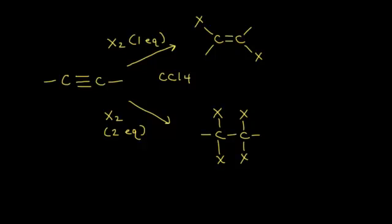Let's look at two more reactions of alkynes, starting with the halogenation of alkynes. I start with my alkyne and add one molar equivalent of a halogen, X2, using carbon tetrachloride as the solvent. I'm going to add those two halogen atoms across my triple bond in an anti-addition, so those two halogens end up on opposite sides from each other.